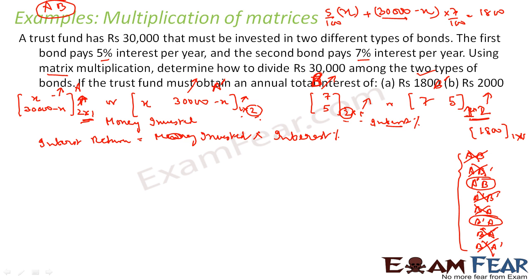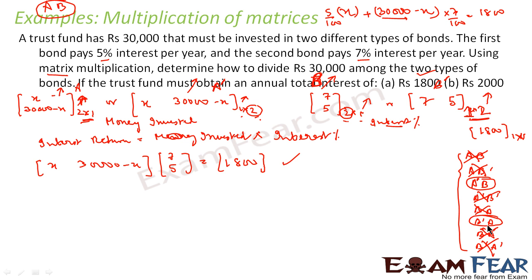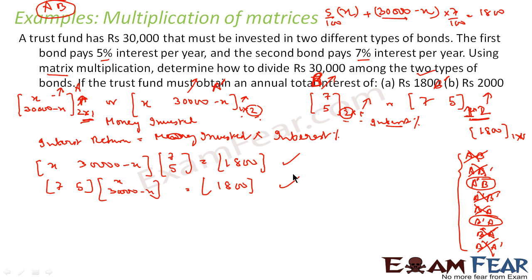I spent more time on this just to explain the concept. Out of 8 possible combinations, only 2 are valid. We can take either one. If we take a dash×b, that is the row matrix [x, 30,000 minus x] multiplied by the column matrix [7, 5], equal to [1800]. Or if we take b dash×a, that is [7, 5] multiplied by column matrix [x, 30,000 minus x], equal to [1800]. Both equations are true and we can solve using either one.